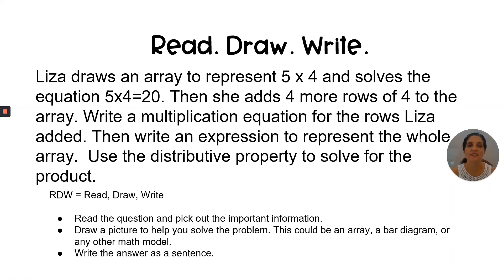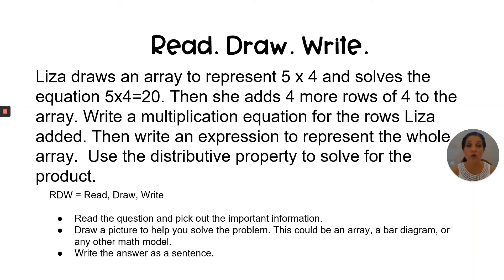Let's put this into practice with a read-draw-write question. The RDW process is going to be used with every word problem. It helps us to really think through how we got to our answer and be able to answer it to the fullest extent possible. We begin by reading the question and finding the most important information, then drawing a picture of a math model or equation to solve the problem. Finally, we write the answer as a sentence. We're going to do this one together — you may follow along at home with paper and pencil, a dry erase board, or on jamboard.google.com on a virtual whiteboard.